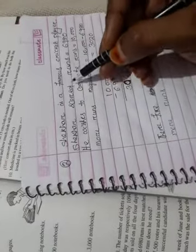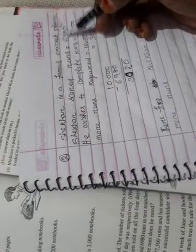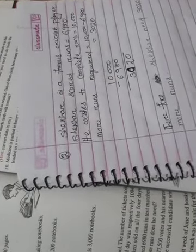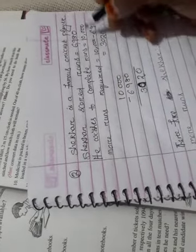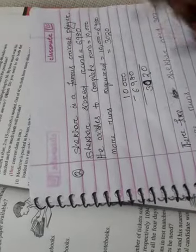Answer. Sekhar is a famous cricket player. Sekhar scored runs 6,980. He wishes to complete runs is equal to 10,000.